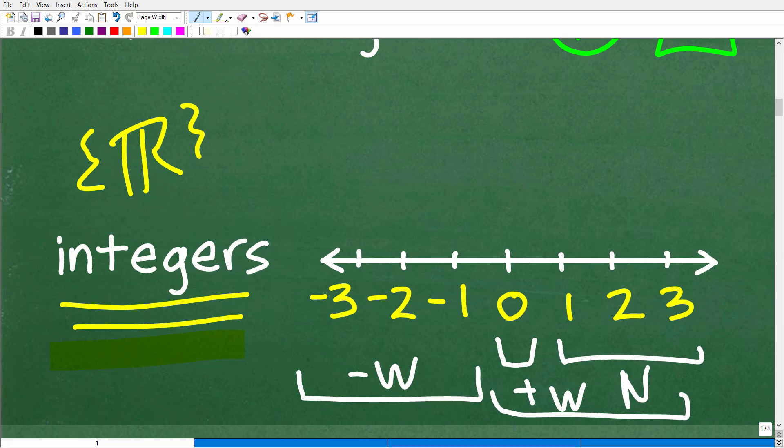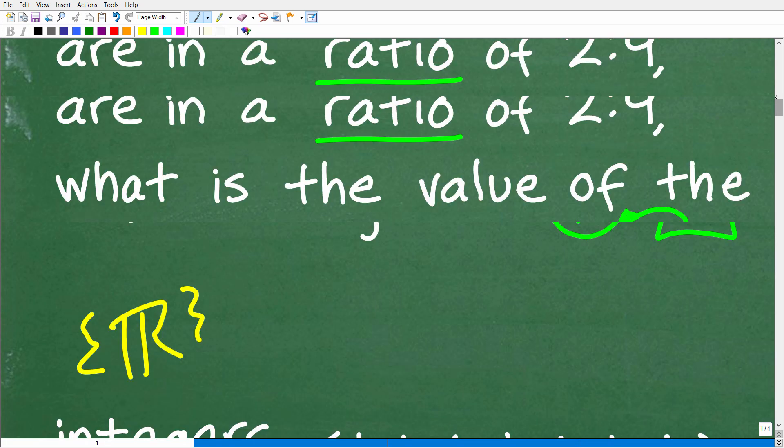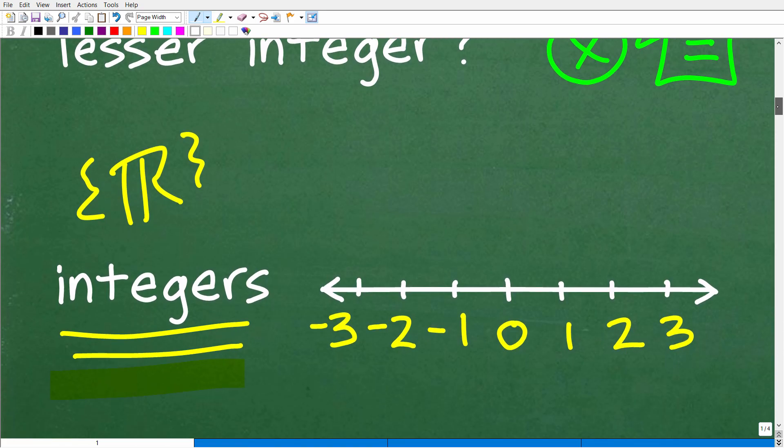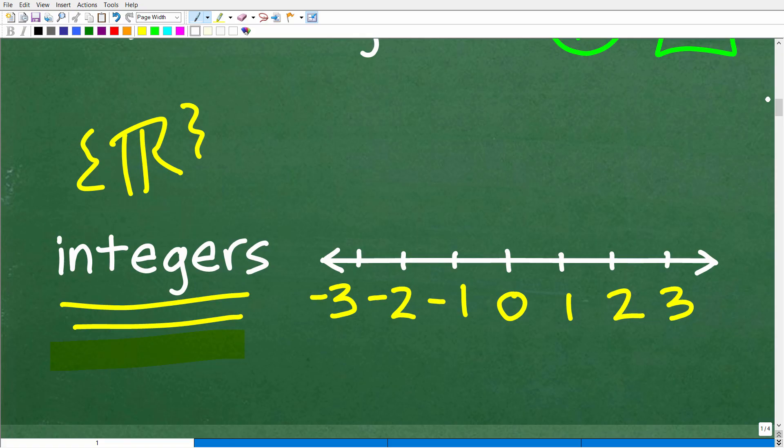And then if we have the positive whole numbers and the negative whole numbers, we have the set of integers. So in this particular case, we're looking for two integers. So two integers, let's go back to the problem here, because this is important. The sum of two integers is positive 44.